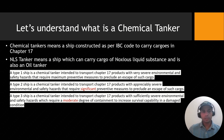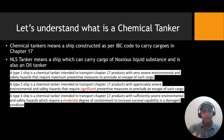A type 2 ship is a chemical tanker intended to carry Chapter 17 products with appreciably severe environmental and safety hazards — a bit lesser than type 1 — that requires significant preventive measures. And type 3 is the easiest construction of all.